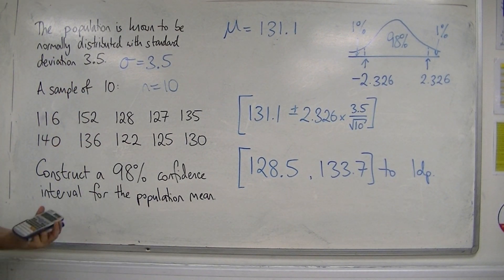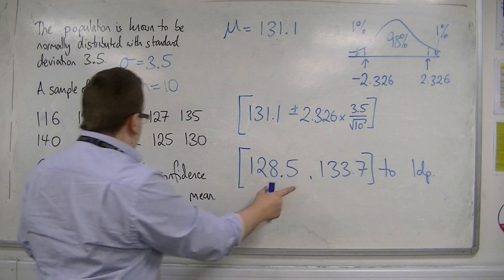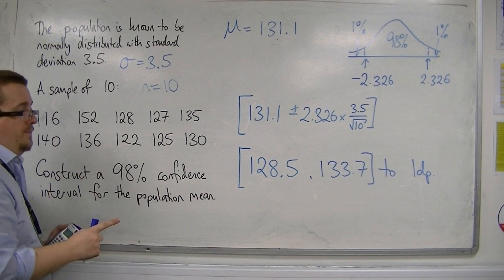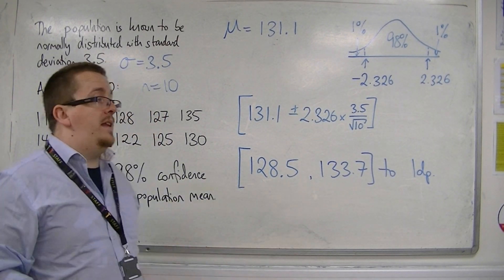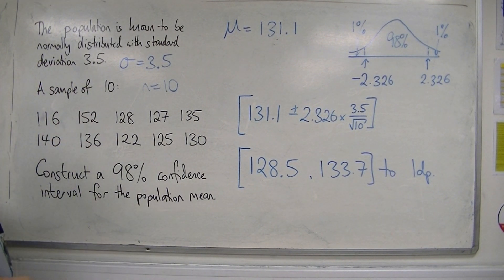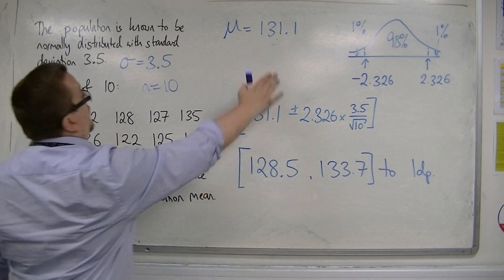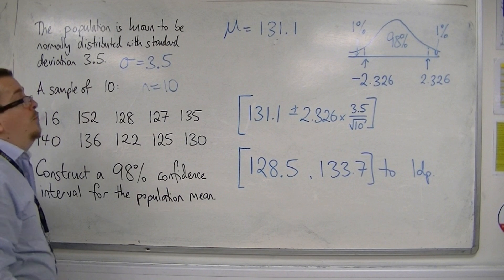So, what we're saying here is that we can be 98% confident that the population mean lies between those two values. Okay, that was my sample mean, 131.1.